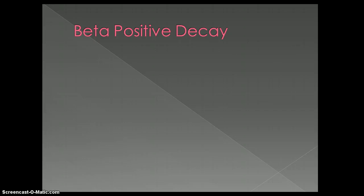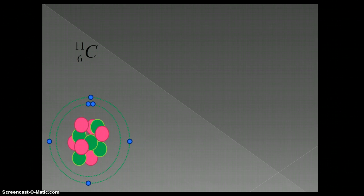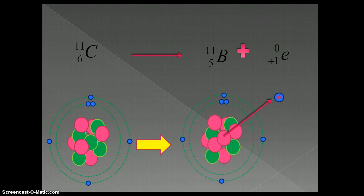Now let's talk about beta positive decay. Let's say we've got carbon. And let's say our carbon atom undergoes beta positive decay. In this case, we would get boron and a positive electron being released, or you might want to call it a positron.